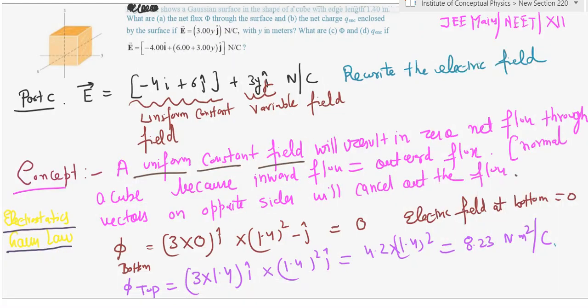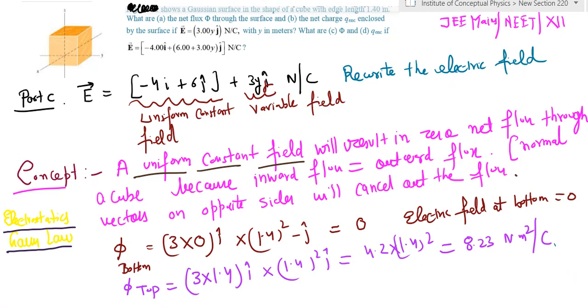That's a correct way of doing it, nothing wrong with that, but you would waste a lot of time. Instead, let me tell you a concept. If you have a cube and a uniform field, which I have rewritten as minus 4i plus 6j.